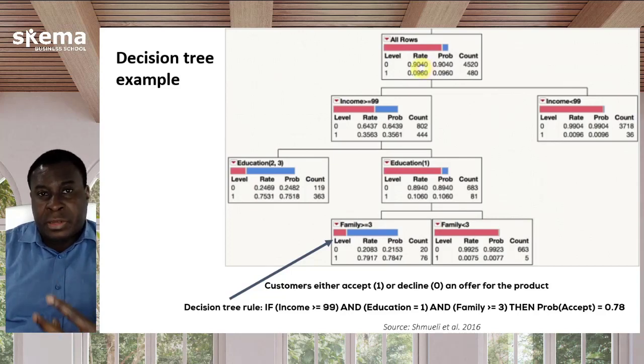The information we have about the clients is first the income level, the entire family income, and this is in euros. So 99 is 99,000 euros as family income. Then education levels—education level one means the highest education is a high school diploma or baccalaureate degree. Education level two is a bachelor's degree or license, and education level three is master's degree or higher.